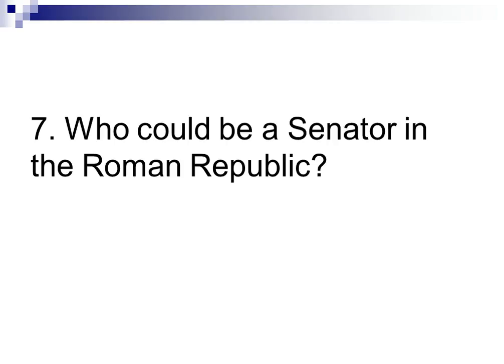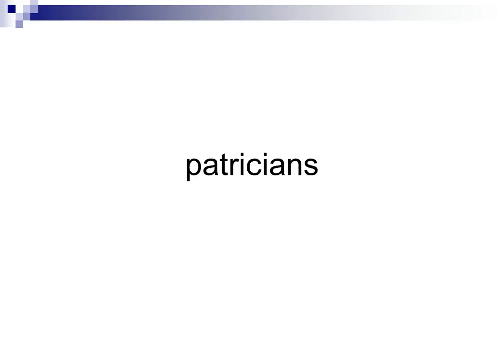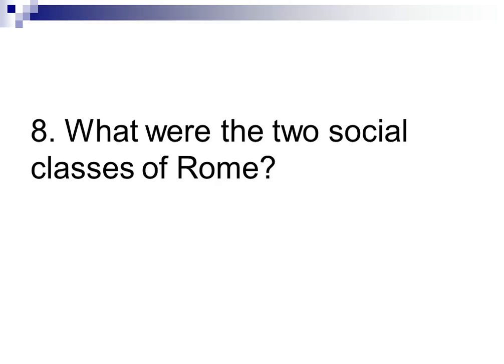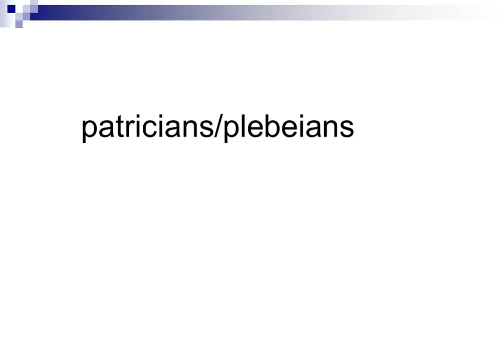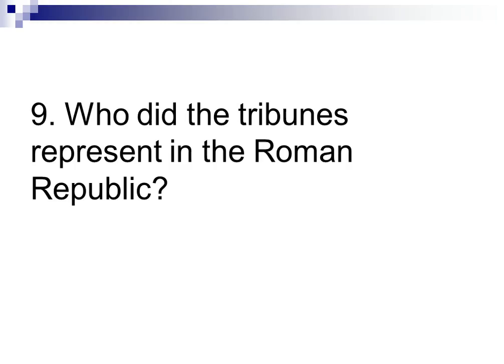Number 7: Who could be a senator in the Roman Republic? Only patricians. Number 8: What were the two social classes of Rome? These were both in your vocabulary for Chapter 8. They were the patricians, who were the rich landowning class, and the plebeians — the small farmers, shopkeepers, artisans, etc. — who made up the majority of the population of Rome.